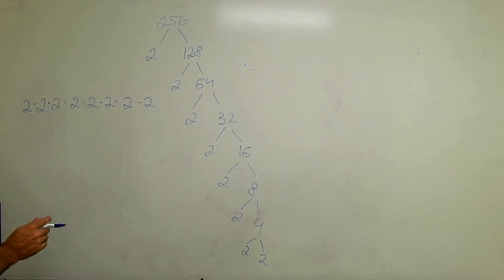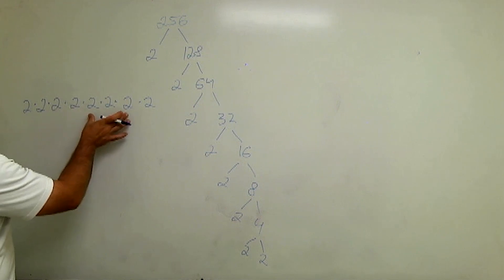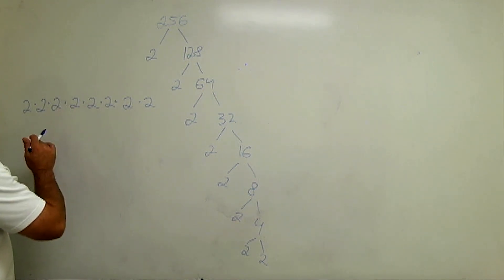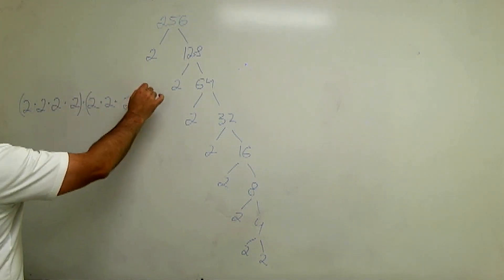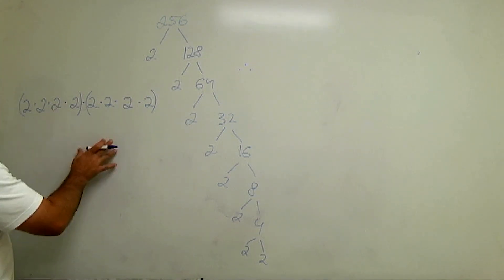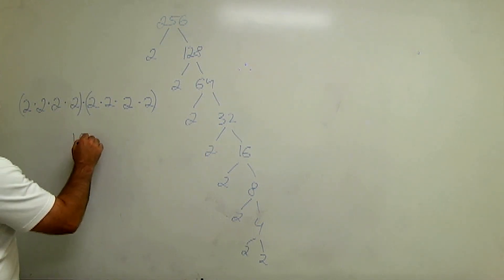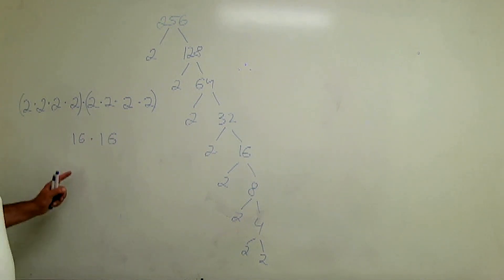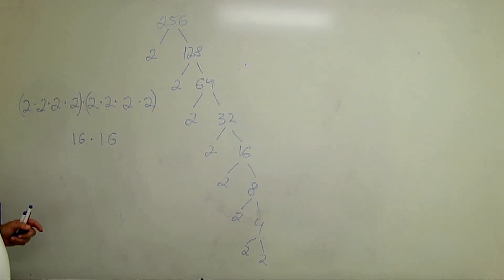Because we're trying to figure out if it's a perfect square, we want to group them into two groups with equal number of factors. So we can group them into two groups where we have four factors of 2 in each group. And then in each bracket, we have 2 times 2 times 2 times 2, which will be 16. In the second bracket it will be 16 as well. So this number is a perfect square.